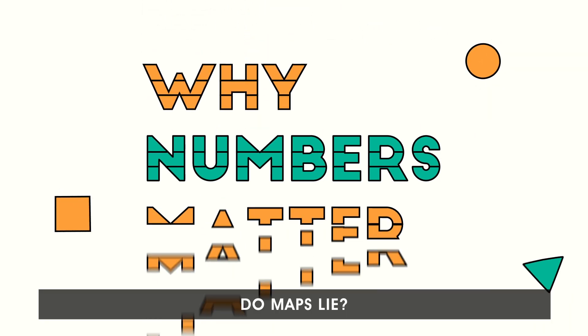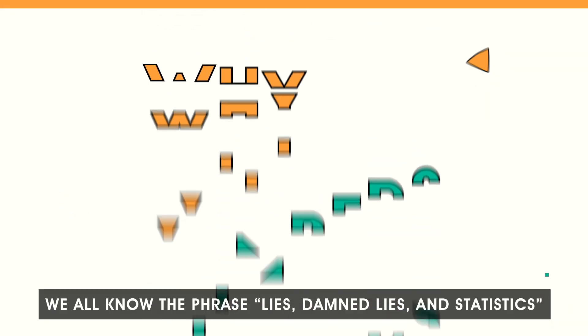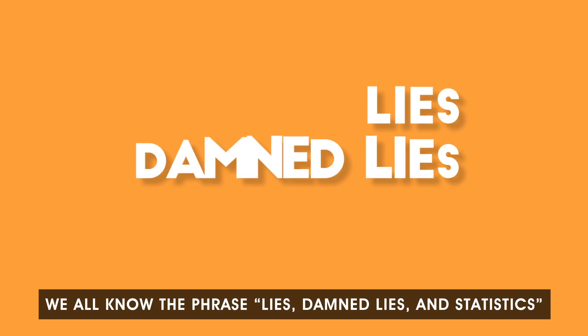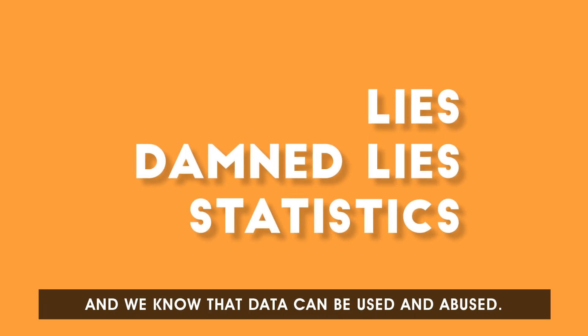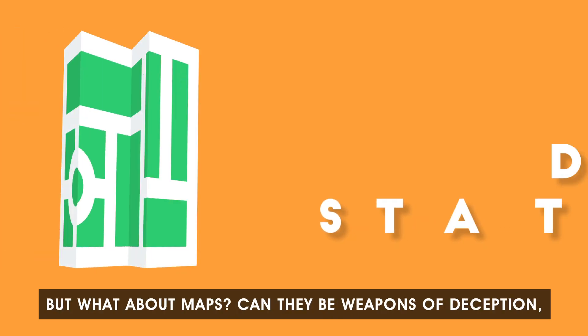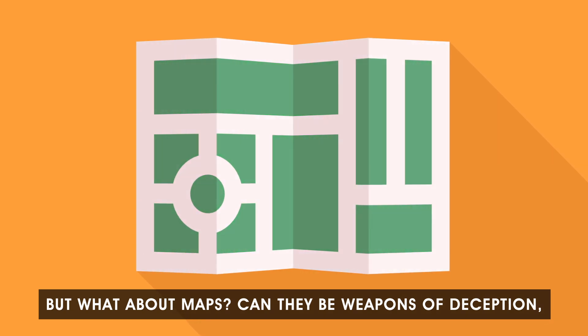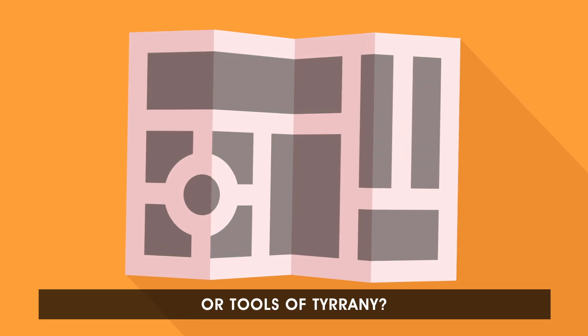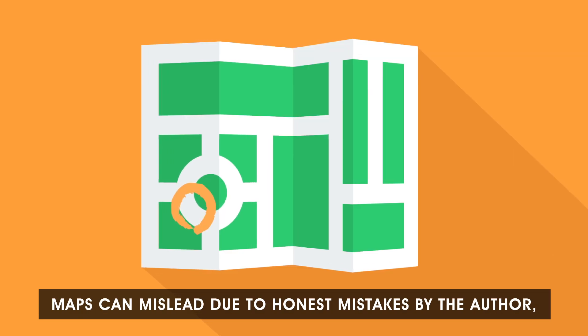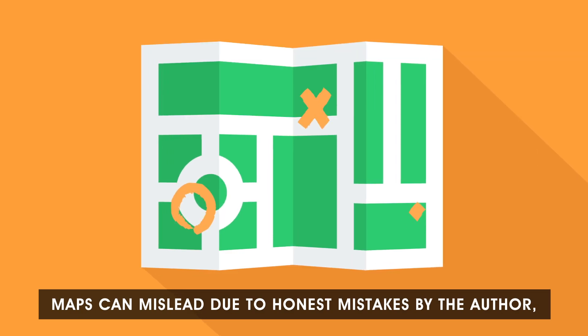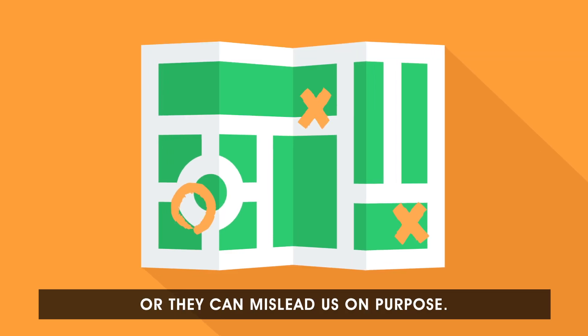Do maps lie? We all know the phrase 'lies, damn lies, and statistics' and we know that data can be used and abused. But what about maps? Can they be weapons of deception or tools of tyranny? Of course they can. Maps can mislead due to honest mistakes by the author, or they can mislead us on purpose.